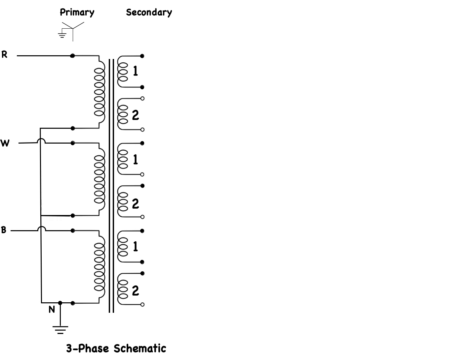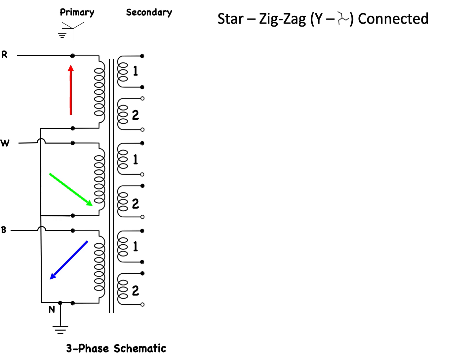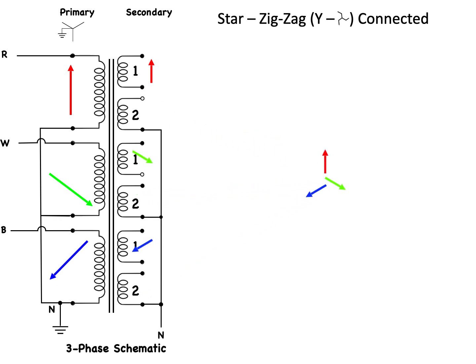This double secondary winding transformer can also be connected in what is known as a zigzag pattern, giving us a star-zigzag, or Y-zigzag, transformer. In this example the primary is connected in a Y configuration and fed from a balanced three-phase system — red, white, and blue. As before, the secondary winding voltages are in phase with the primary side winding voltages. The number 2 secondary windings are connected in a Y configuration, and the phasors of the secondary voltages are pinned together, giving the familiar Y pattern.